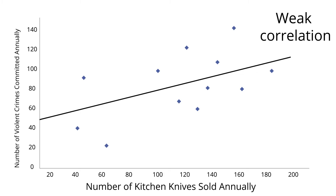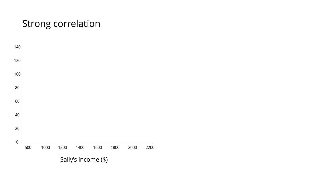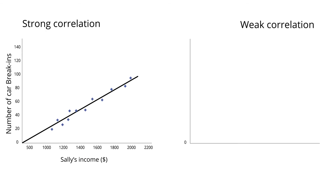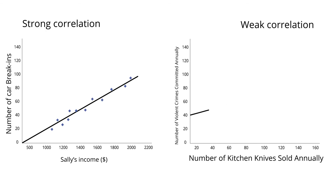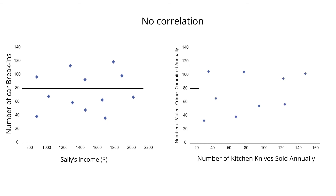A giant spike in knife sales one year might show no change in violent crime rates. On a scatter plot, you can tell how strongly two variables correlate by drawing a regression line — a straight line that is as close to as many data points as possible. If data points tend to be close to this line, the correlation is strong. If data points are farther away but still form a rough line, the correlation is weak. However, if the data points are distributed so randomly that it is impossible to draw a neat regression line, then there is no correlation.